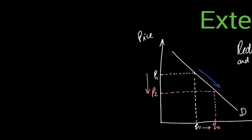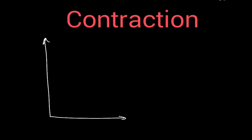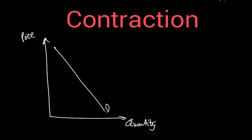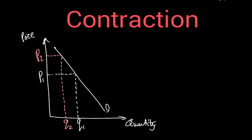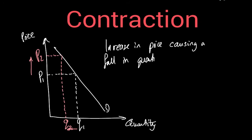The other option is a contraction, which goes the other way. In the same quick sketch diagram — price on the vertical, quantity on the horizontal, downward sloping demand curve — a contraction means a reduction in the quantity demanded, so a movement to the left from Q1 to Q2. A contraction occurs when an increase in price causes a fall in the quantity demanded.